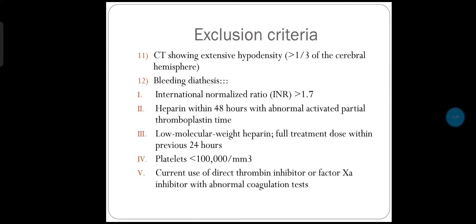CT showing extensive hypodensity more than one third of the cerebral hemisphere. Bleeding dyscrasias, which include: international normalized ratio more than 1.7; heparin within 48 hours with abnormal activated partial thromboplastin time; low molecular weight heparin at full treatment dose within the previous 24 hours.